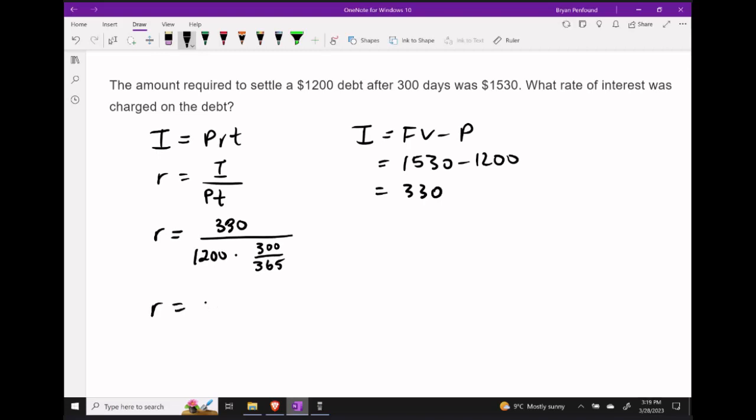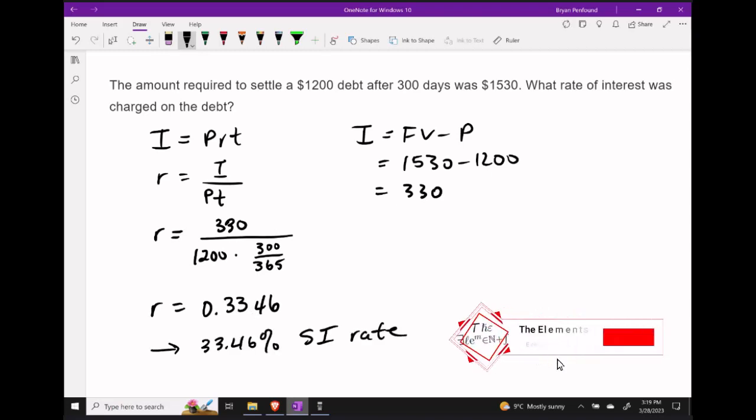Simplifying this expression, we get a decimal number of about 0.3346, correctly rounded to four decimal places. This means our debt had a whopping 33.46% simple interest rate.